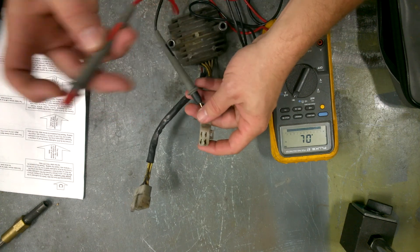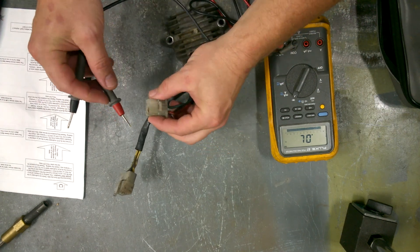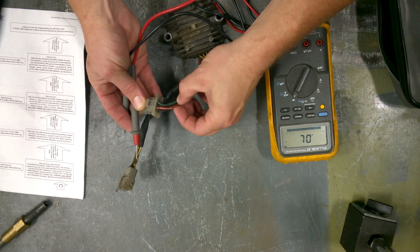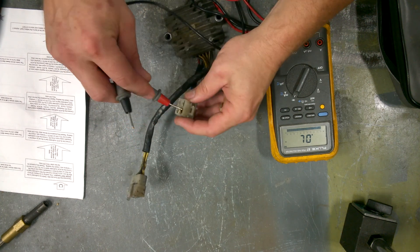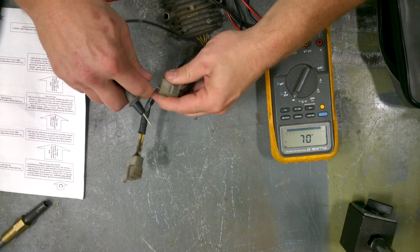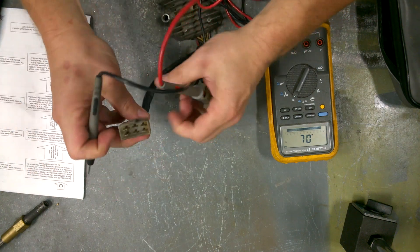So starting out, you want to put your hot, your red, onto the battery return, which is, this is from a Honda, so it's a red and white striped wire. So we'll get that thing in. It's got a little bit of corrosion in there.